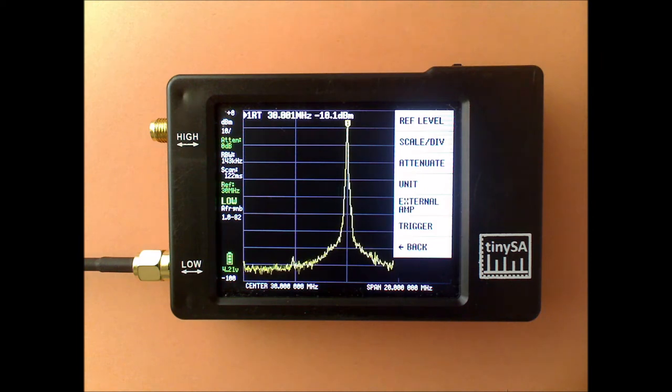The REF level is normally set automatic to ensure that the strongest signal is just visible and if there is no strong signal that the noise is at the bottom of the screen.